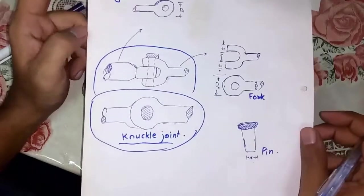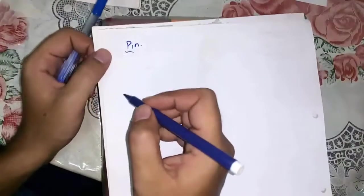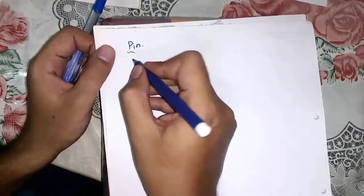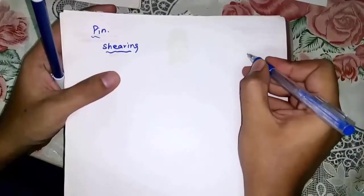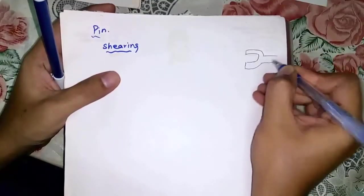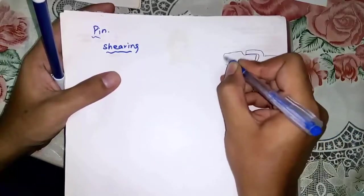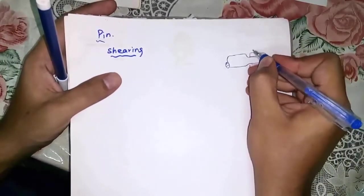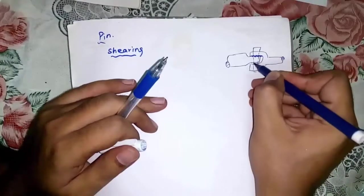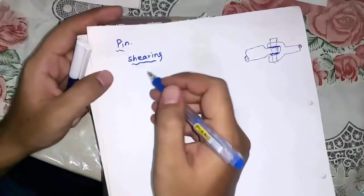Pin - let's move toward the failures. First we see the failures of pin. I draw the top view of the knuckle joint. Pin may shear off like this, which is double shearing of pin.